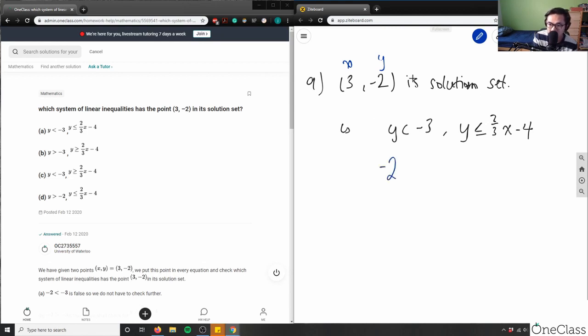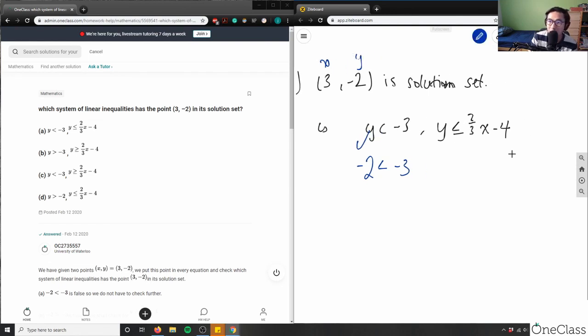Y is -2. Negative 2 is indeed less than -3, so that's good. It meets the first condition. And then Y here is -2 again, and it has to be less than or equal to 2/3 times X, which is 3, minus 4. So -2 is less than or equal to 2/3 times 3, which is just simply 2 minus 4. And -2 actually equals -2, so that's okay.